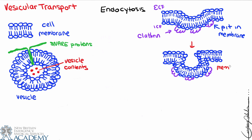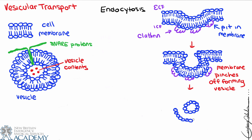We'll draw a little progression of what happens. The vesicle essentially pinches off, and we can see those clathrin molecules are still around it. Eventually we make our vesicle. The vesicle can have a couple of different possible fates, depending in part on the specific type of endocytosis occurring, what the contents are, and what the cell needs at that point in time.